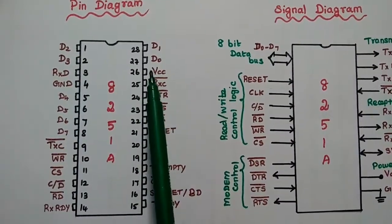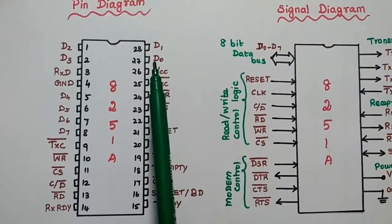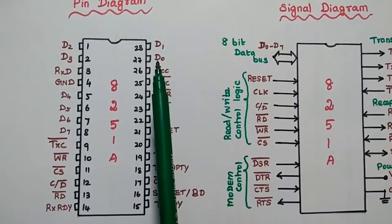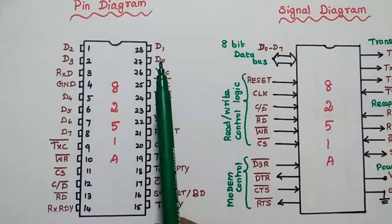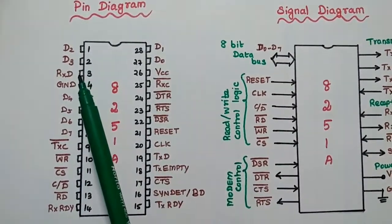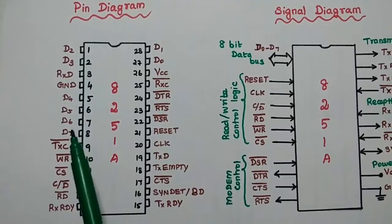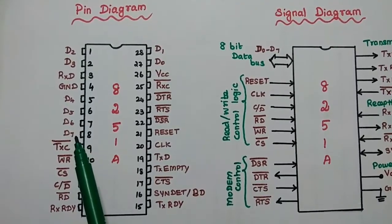It has an 8-bit data bus. The data lines are represented as D0, D1, D2, D3, D4, D5, D6, D7.